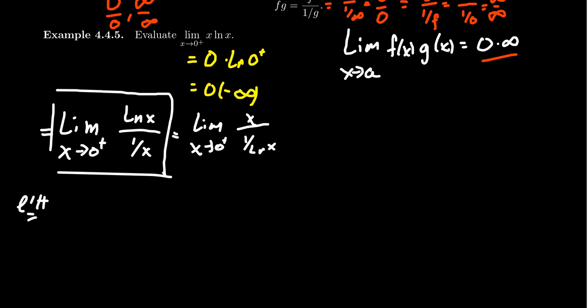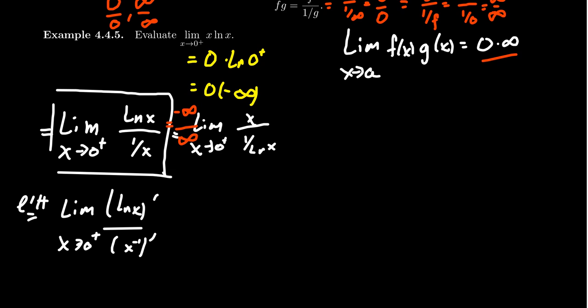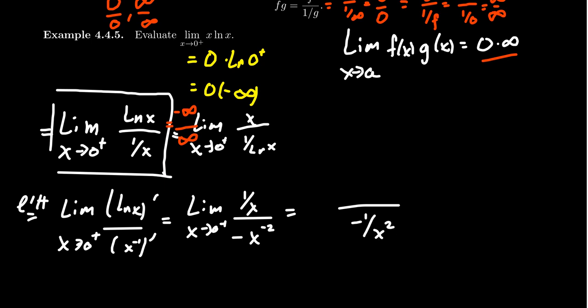Applying L'Hôpital's rule — this expression now has the form infinity over infinity as x goes to zero, since the numerator looks like negative infinity and the denominator like positive infinity. So we take the derivative of ln(x), which sits above the derivative of x to the negative 1, as x approaches zero from the right. The derivative of ln(x) is 1/x. The derivative of x to the negative 1 by the power rule is negative x to the negative 2, as x approaches zero from the right.